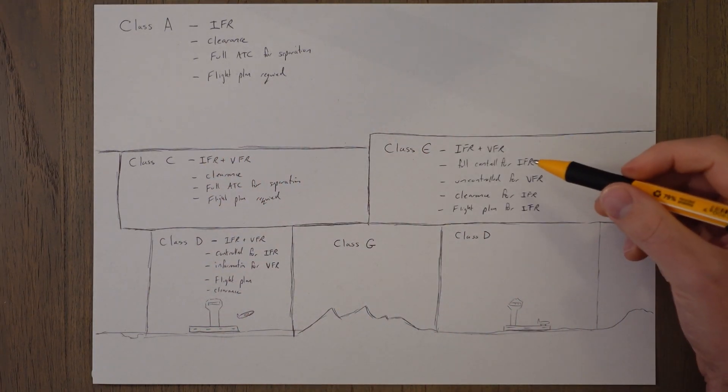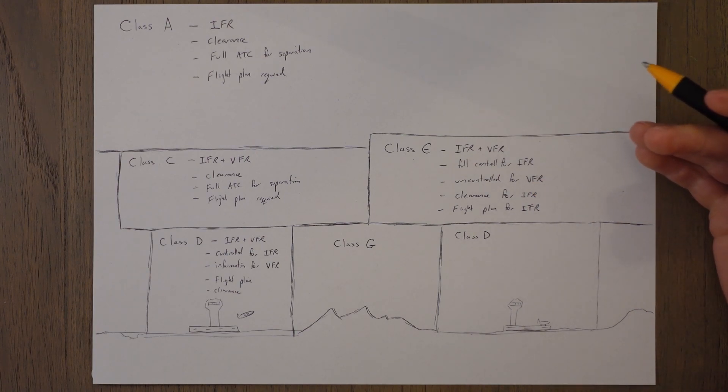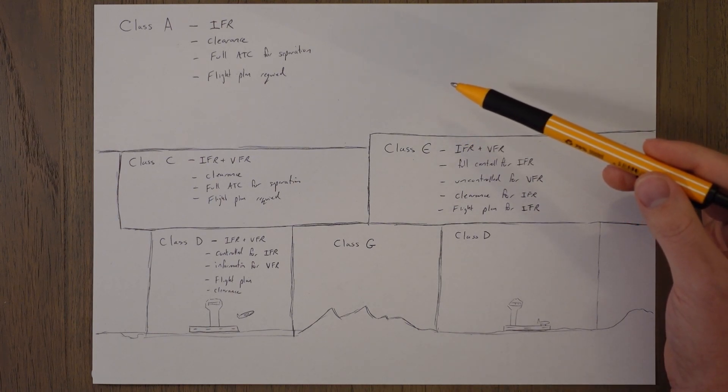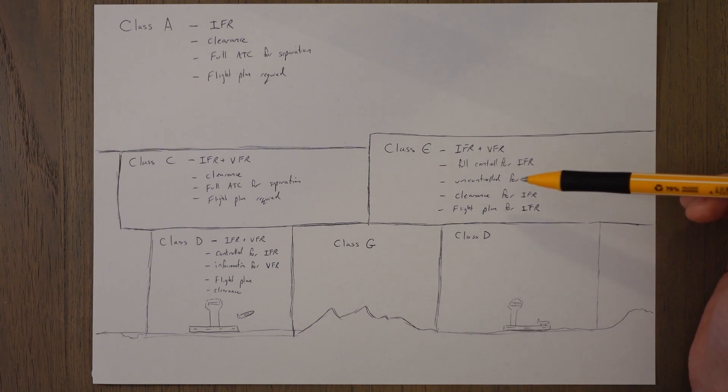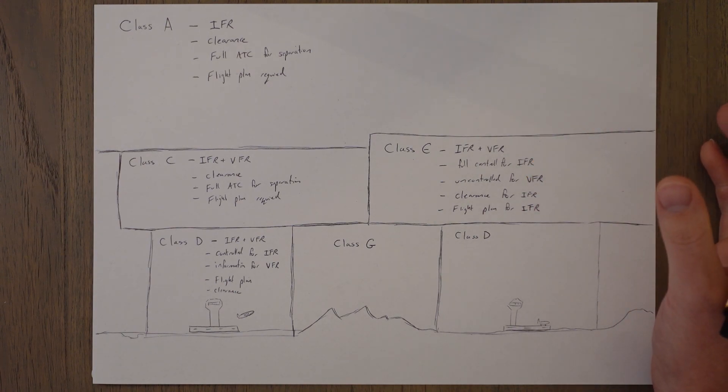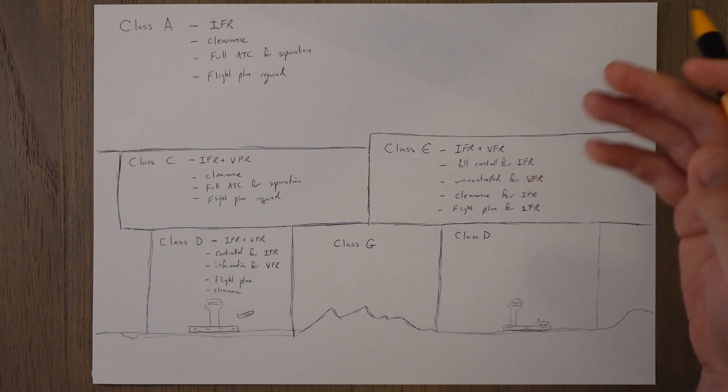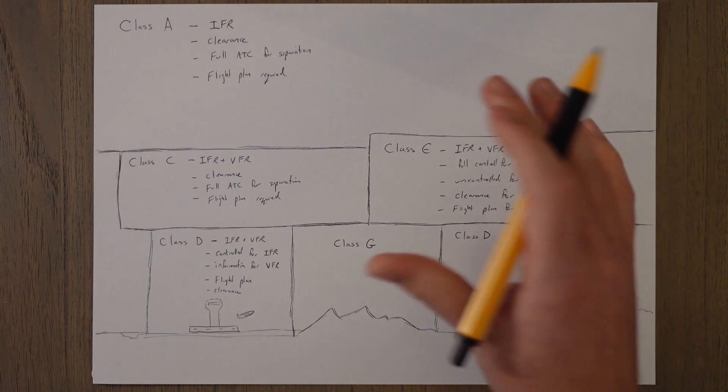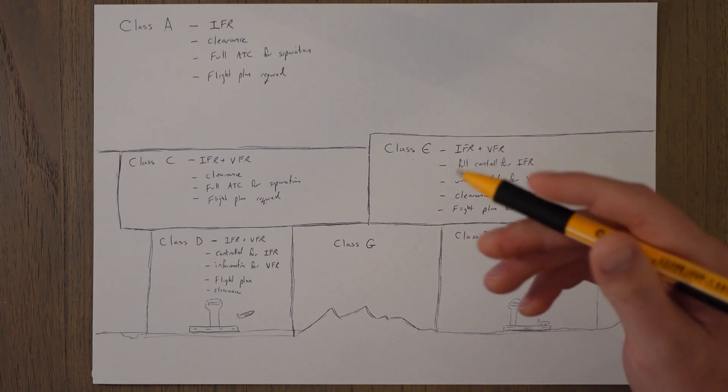Class E airspace allows IFR and VFR traffic. It's basically controlled in the sense of class A airspace for IFR traffic. So you get full separation from other IFR traffic and you get information on VFR traffic that are in the area. But for VFR traffic this is uncontrolled airspace. You get no information, well you can ask for information from air traffic control but they won't provide traffic separation.